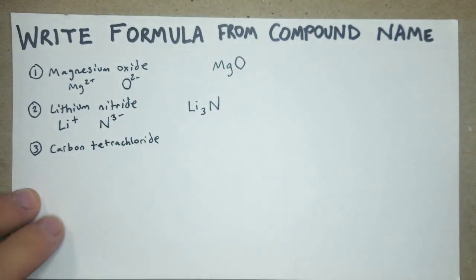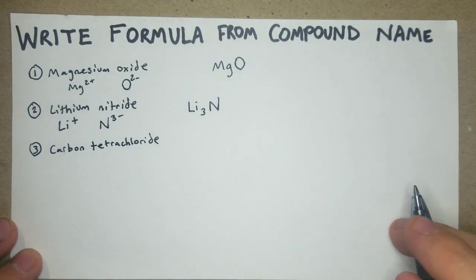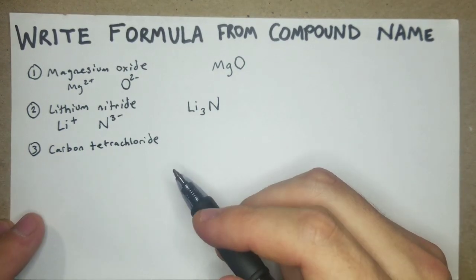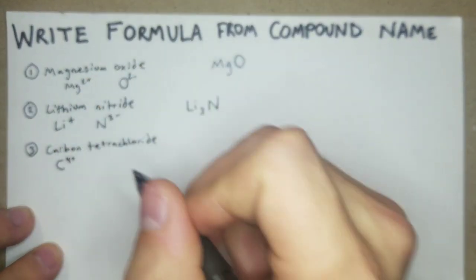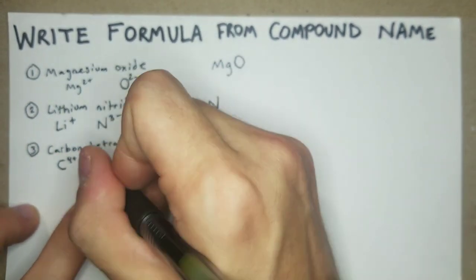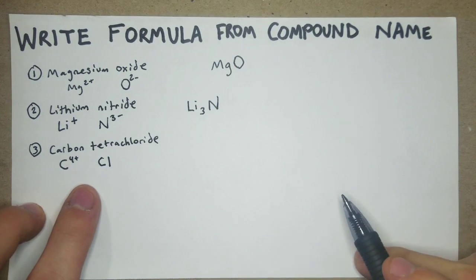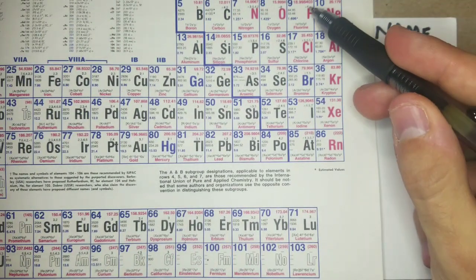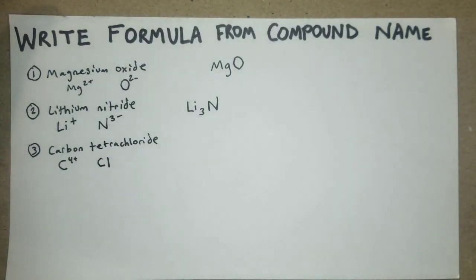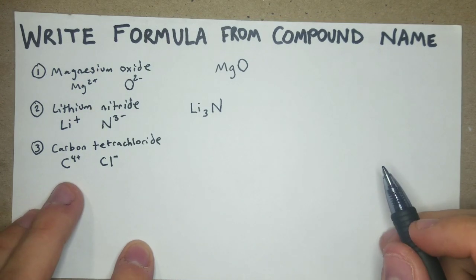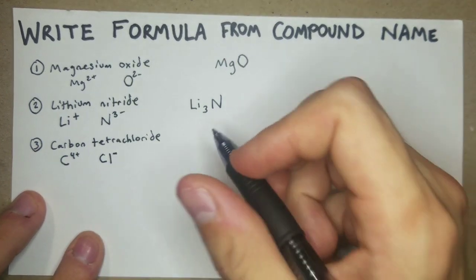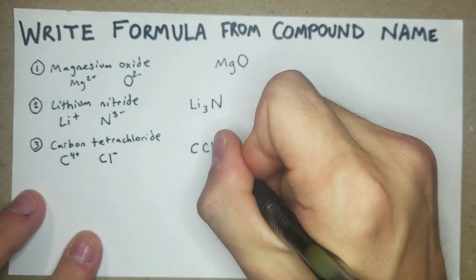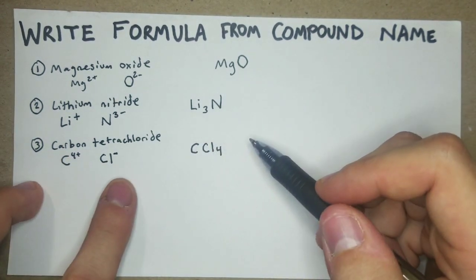Next, a trickier one: carbon tetrachloride. Breaking down the word, you can tell there's chlorine, and 'tetra' tells us how many. Carbon is 4+. Chlorine is in the last column under fluorine, so it's 1-. We need four chlorines to equal a 4- charge to neutralize the 4+, giving us CCl4. So 'tetrachloride' refers to four chlorides.